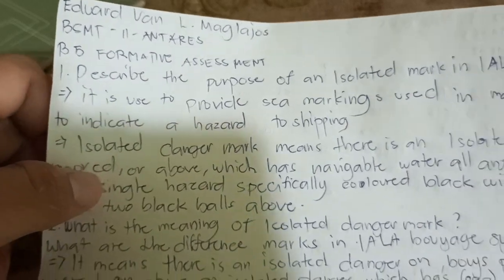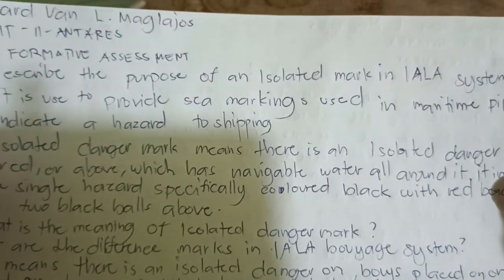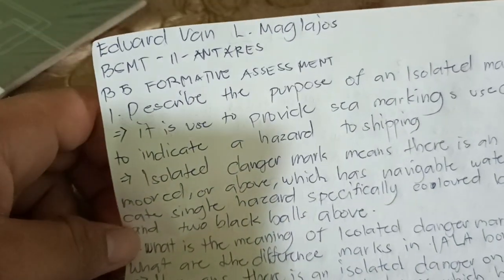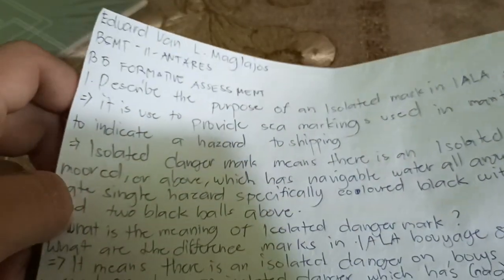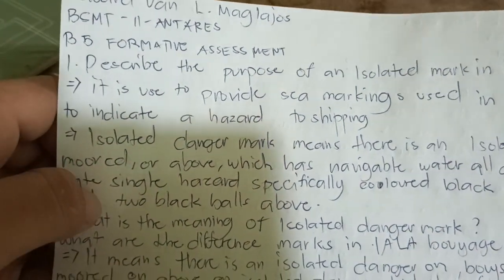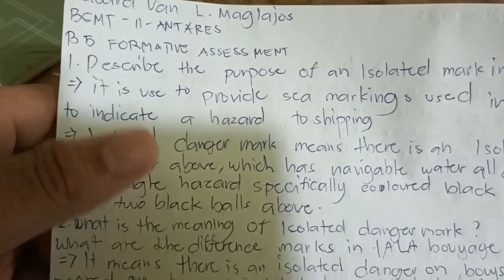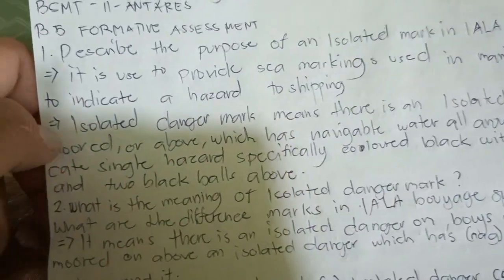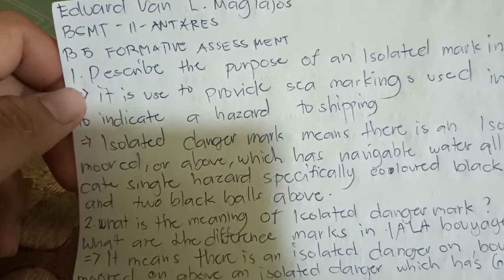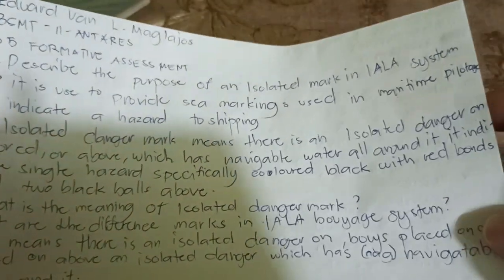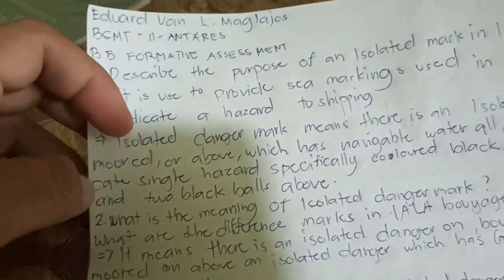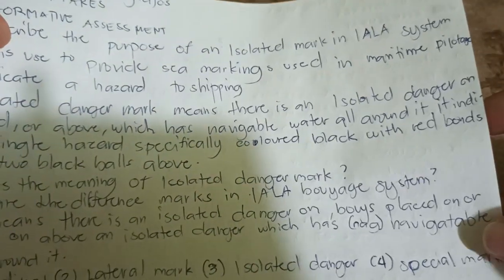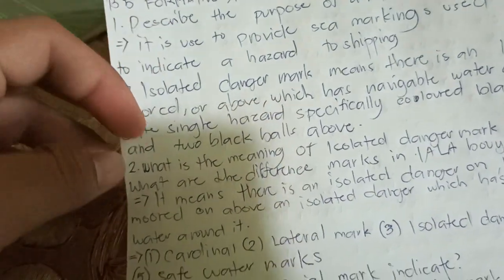Number one, I described the purpose of an isolated mark in IALA system. It is used to provide the sea markings used in maritime pilotage to indicate a hazard. An isolated danger mark means there is an isolated danger moored or above which has navigational water all around it. It is indicated as a single hazard specifically, colored black with red bands, and two black balls above.